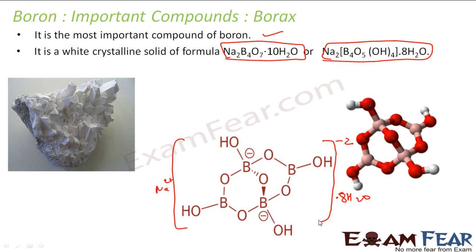With the structure of borax, the way it is linked is: they have 4 borons, and all these are linked with oxygen in this fashion, and there is oxygen here also. All these borons are linked with OH molecules.